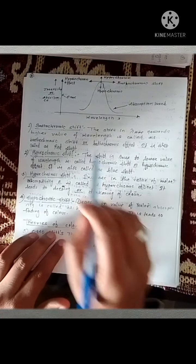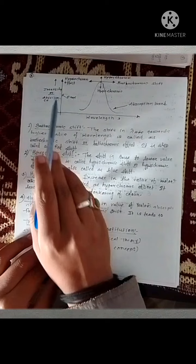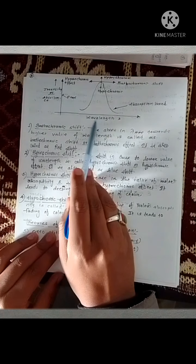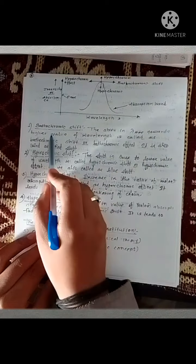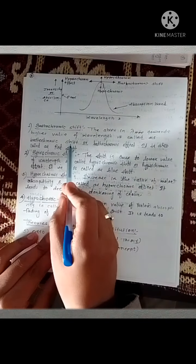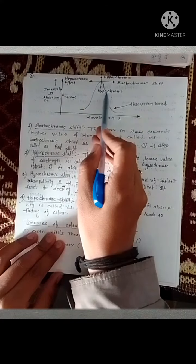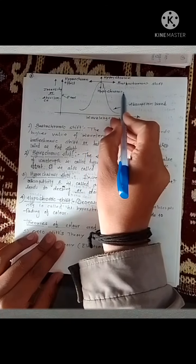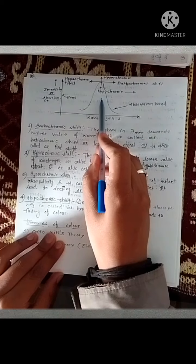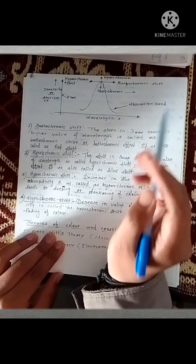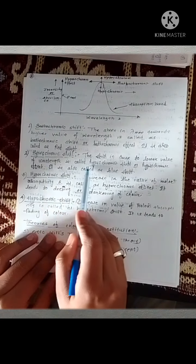Now, see this graph — it is a graph between intensity or absorbance versus wavelength of light. What is meant by bathochromic shift? The shift in lambda max towards a higher value of wavelength is called bathochromic shift or bathochromic effect. It is also known as red shift. If this peak shifts towards the right-hand side, it is known as bathochromic shift, meaning the lambda max value increases.